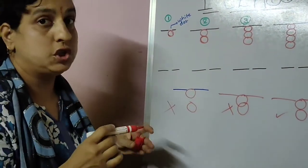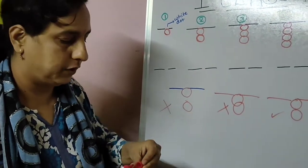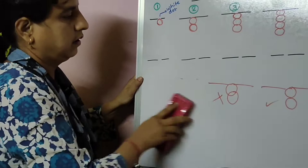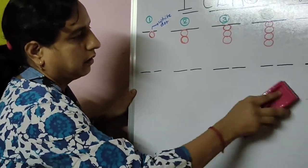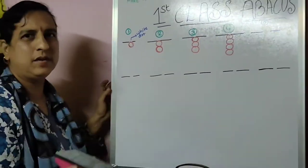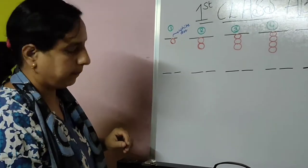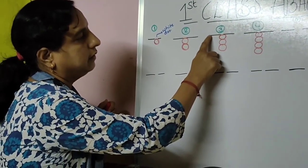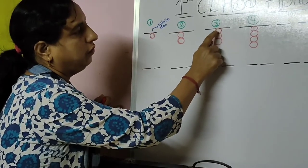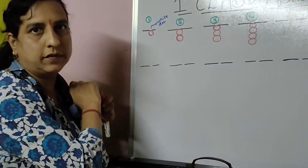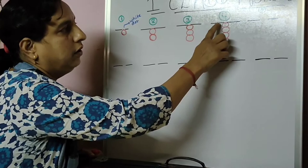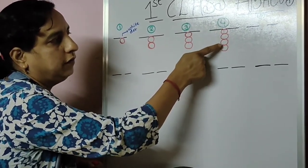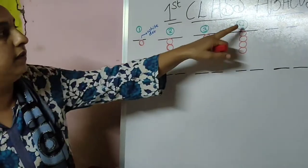Bachchon, is tarah draw karna hai. Very simple, you can learn it. So this is 3 — divider's line, white dot, 1, 2, 3 beads. Here also divider, white dot, 1, 2, 3, 4 — the value of this is 4.